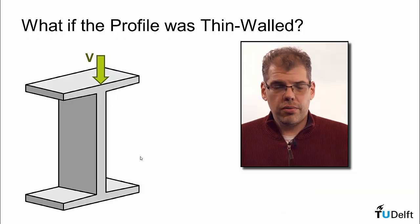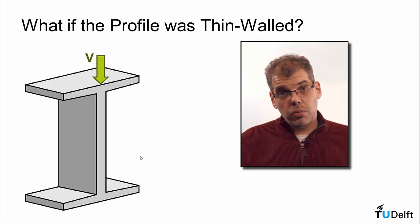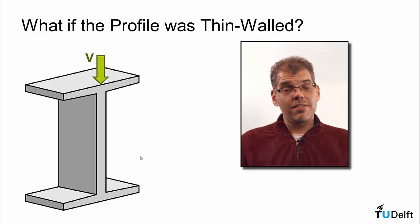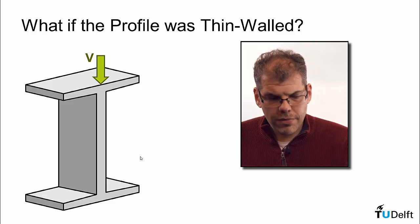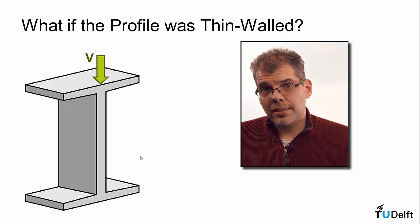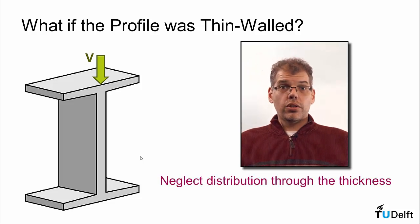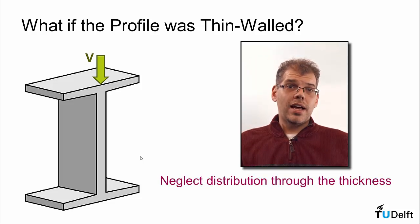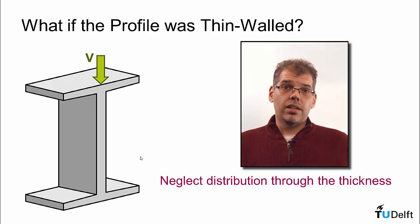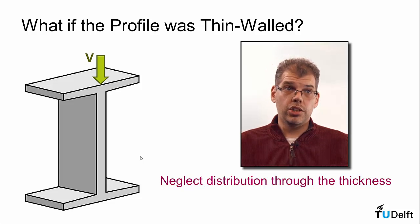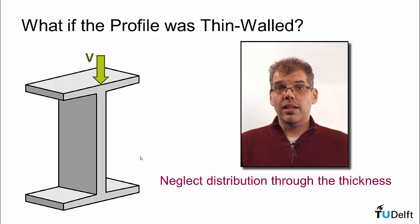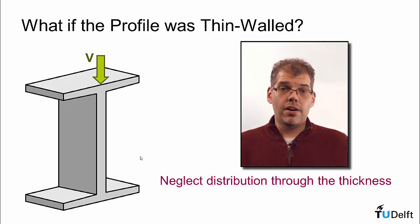So what if this profile was thin-walled? We were actually looking at a similar profile but with a very thick flange. If you recall what thin-walled means: if we call something thin-walled, we say that the stress distribution through the thickness is negligible. We looked at this in torsion, where we made the shear stress distribution uniform rather than linear, because we said you could neglect any variation over that very small distance.